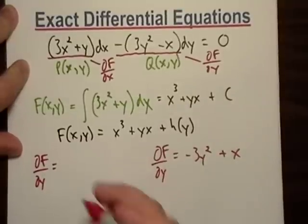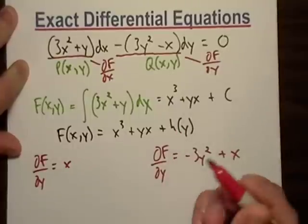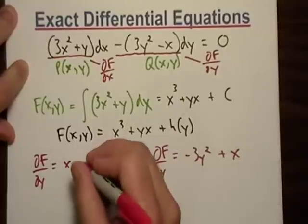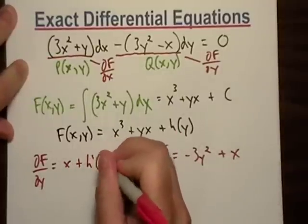You know, and x is just a constant here, so that just turns into x. And h prime of y, or h(y) just turns into h prime of y. Sorry.